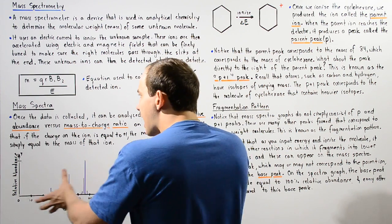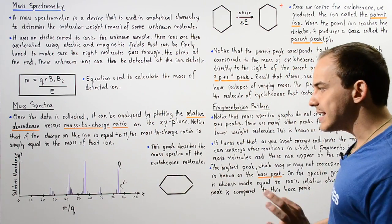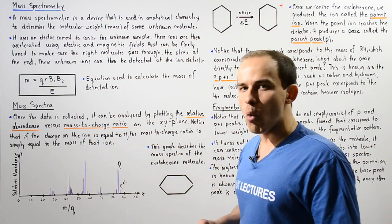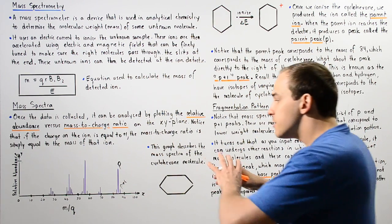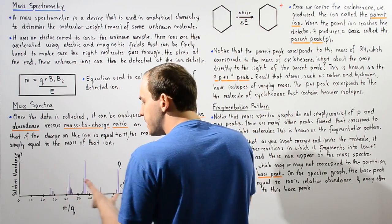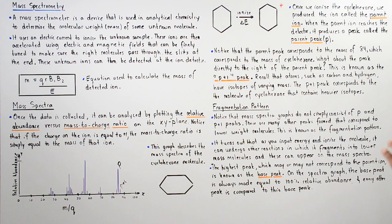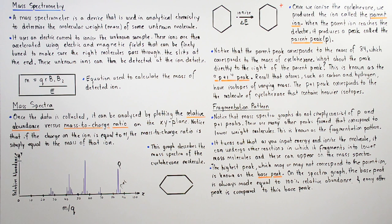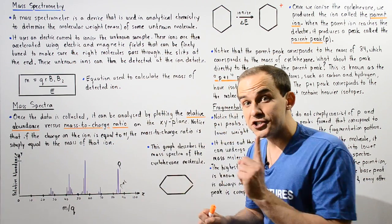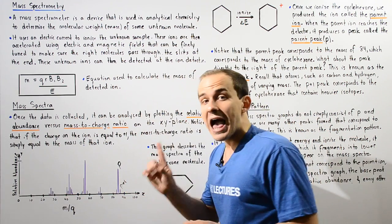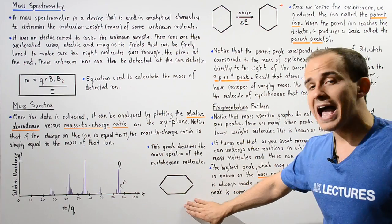The entire mass spectra doesn't only consist of the parent peak and the p+1 peak — it contains many other peaks as shown in the diagram. This entire collection of peaks is known as the fragmentation pattern. These additional peaks correspond to lower-weight molecules and have masses much lower than the mass of the actual parent molecule.